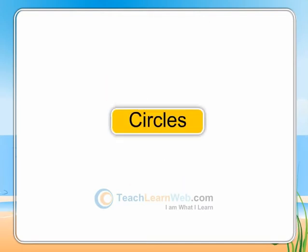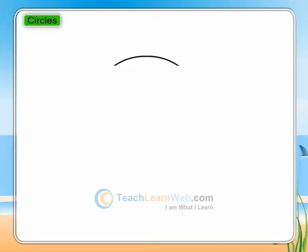Circles. A circle is a simple closed curve which is not a polygon with some special properties.